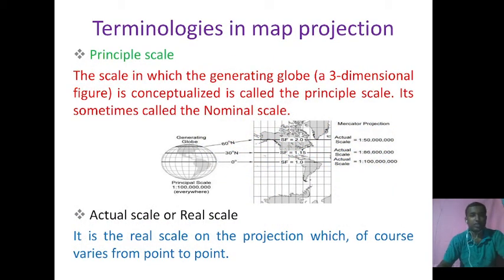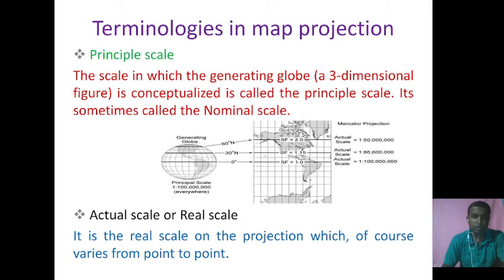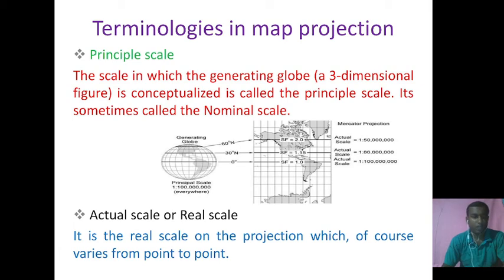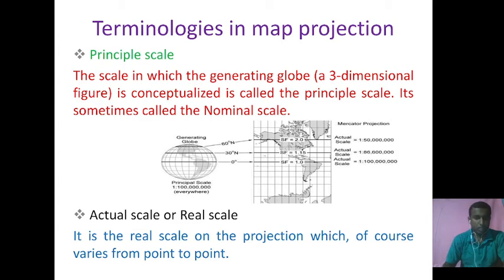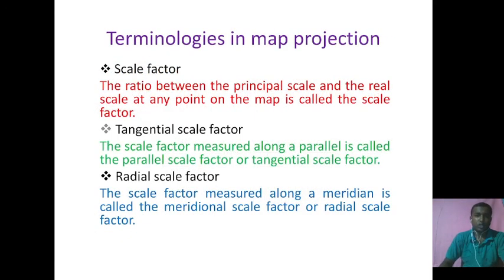Now I am talking about the scales in map projection. First of all, I would like to talk about principal scale. The scale in which the generating globe — a three-dimensional figure — is conceptualized is called the principal scale. It is sometimes called the nominal scale. Now I am talking about the actual scale or real scale. It is the real scale on the projection which of course varies from point to point. The ratio between the principal scale and the real scale at any point on the map is called the scale factor.